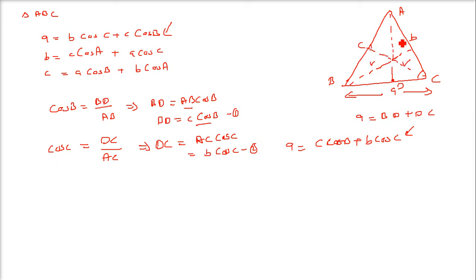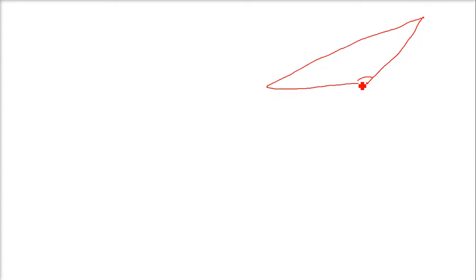For the other formulas, you can drop a perpendicular and take the two triangles similarly. Now coming to the second scenario, which is when triangle ABC is an obtuse angled triangle. One of the angles is greater than 90 degrees. We have triangle ABC with sides C, A, and B. Let me extend it and drop a perpendicular.